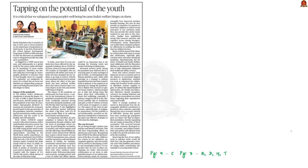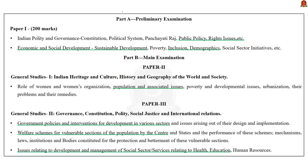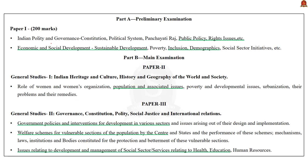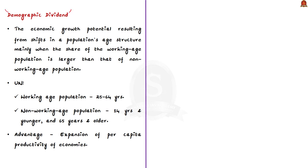Moving to the next news article: 'Tapping on the Potential of the Youth.' This open editorial discusses the importance of harnessing the demographic dividend of our country and the obstacles in it. Demographic dividend is the economic growth potential that can result from the shift in a population's age structure, and this happens mainly when the share of working-age population is larger than the non-working-age share. According to the United Nations, the working-age population is between 25 to 64, while the non-working-age population is below 14 and 65 years and older.